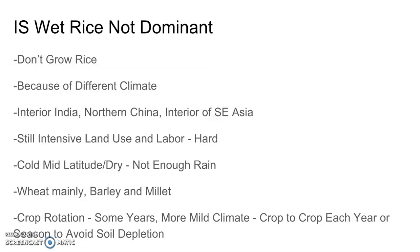Intensive subsistence wet rice not dominant means they do not grow rice. It is still very labor-intensive, but they don't grow rice because of a different climate. This is in the interior of India, northern China, and the interior of Southeast Asia, where you don't get the heavy rainfall from monsoons or heavy storms. It's still intensive land use and intensive labor. The climate is cold mid-latitude or dry — not enough rain to grow rice. They mainly grow wheat, but also barley and millet, sometimes using crop rotation by season to avoid soil depletion.